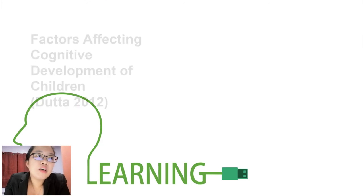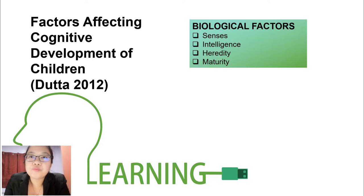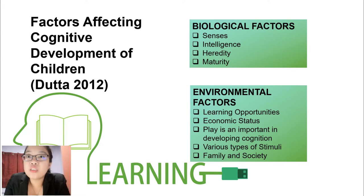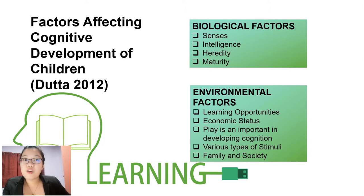We have here the factors affecting cognitive development of children. First, we have biological factors; second, we have environmental factors. Under biological factors: senses, intelligence, heredity, and maturity. Under environmental factors: learning opportunities, economic status, play — which is important in developing cognition — various types of stimuli, and family and society.